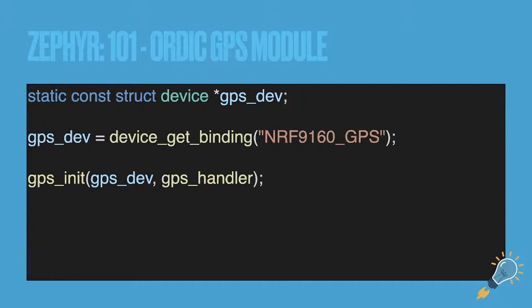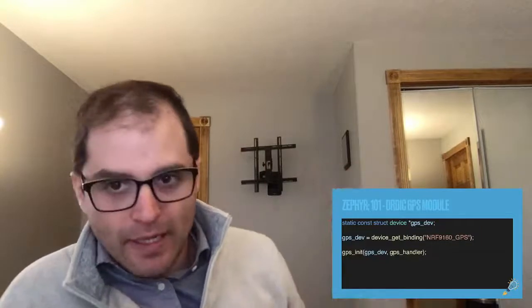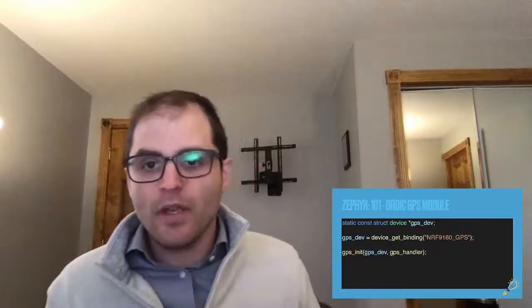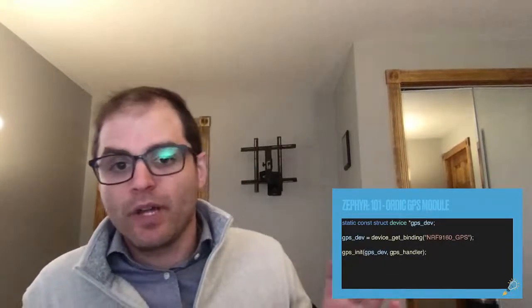In Nordic's GPS module, the Nordic's device is just like any other device, the GPS module, you're getting it by using that particular binding name, which is the NRF 9168 underscore GPS. And then in their library is GPS underscore init. And then you give it the device and also the handler. The handler gives you all the events and data as it's processing.